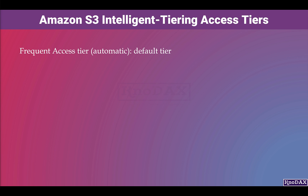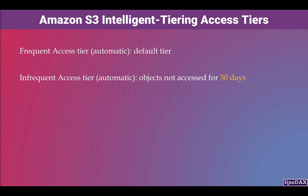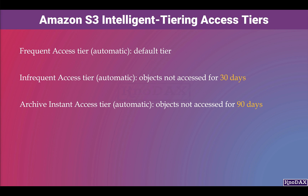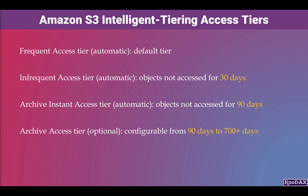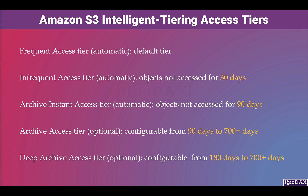S3 Intelligent Tiering moves objects between access tiers while the storage class remains the same. The frequent access tier is the default; objects not accessed for 30 days move to the infrequent access tier, and objects not accessed for 90 days move to the archive instant access tier automatically. Optionally, you can configure objects to move to the archive access tier from 90 to 700-plus days, or to the deep archive access tier from 180 to 700-plus days.